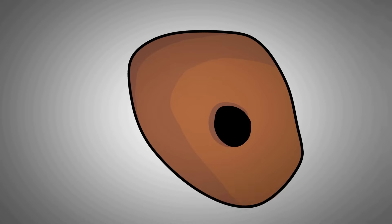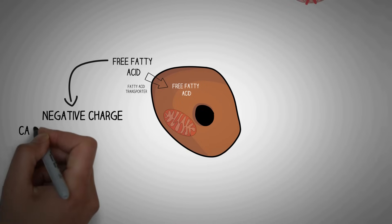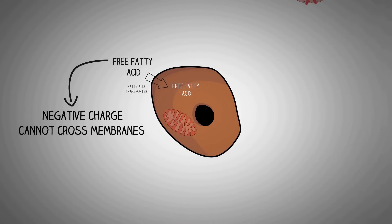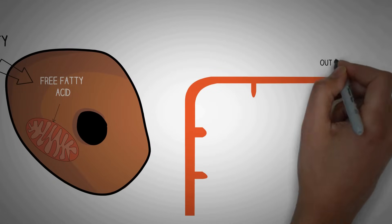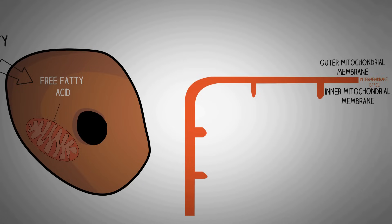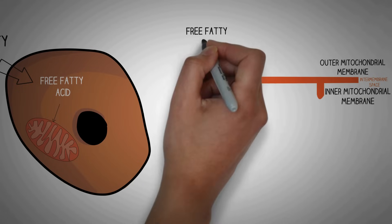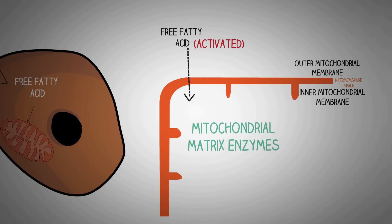A target cell that is able to metabolize free fatty acids does so with the help of mitochondria. The free fatty acid first enters into the cytoplasm of the cell through a special protein called the fatty acid transporter. Free fatty acids have a net negative charge and cannot cross cell membranes on their own, so they require special transporters. In the next step, the free fatty acid must enter into the matrix of the mitochondria after crossing its outer and inner mitochondrial membranes. The mitochondrial matrix contains all the enzymes required for beta oxidation of fatty acids, as well as enzymes for the Krebs cycle and electron transport chain.